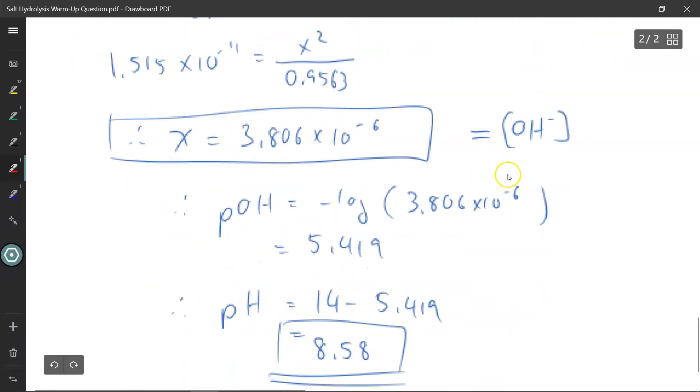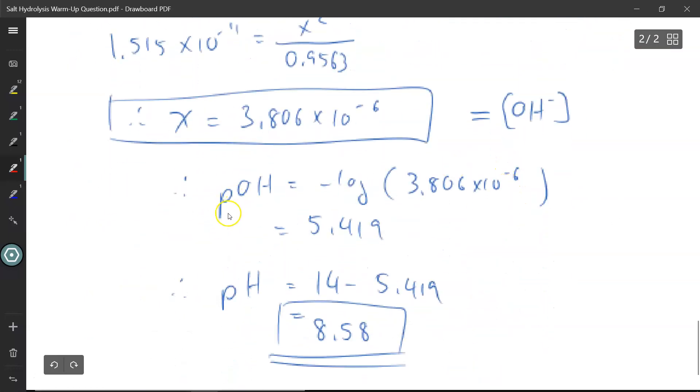So now I have the hydroxide ion concentration. From there, it's just a matter of using my pOH calculation. pOH is equal to negative logarithm of the hydroxide concentration. So therefore my pOH value is 5.419. But the question asked for pH, not pOH. So I'm going to use the conversion factor where pH plus pOH adds up to 14, rearrange the equation, and solve for pH.